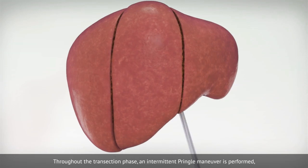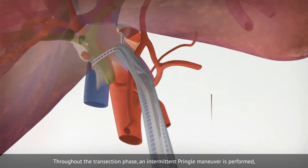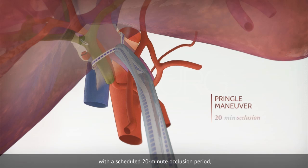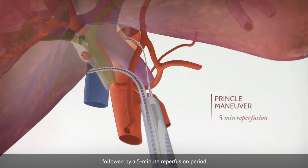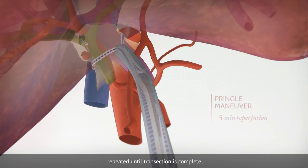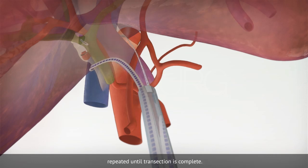Throughout the transection phase, an intermittent Pringle maneuver is performed, with a scheduled 20-minute occlusion period, followed by a 5-minute reperfusion period, repeated until transection is complete.